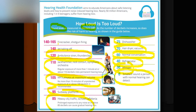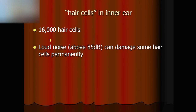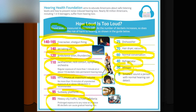At 140 dB — jet takeoff. 140 to 165 dB includes firecrackers and gunshots. These are sounds and their corresponding sound levels in units of decibels. Research clearly shows that anything above 85 dB is dangerous and we should avoid it as much as possible.